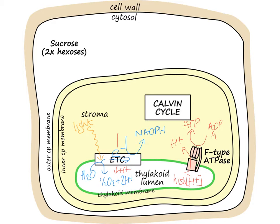So there are two stages to the light-dependent reaction. First, light hits and stimulates an electron transport chain, moving electrons from water through to NADPH. Second, the electron transport chain moves protons across the membrane, and those protons go back through the F-type ATPase to make ATP. As a result of these two processes, we now have NADPH and ATP available in the stroma.